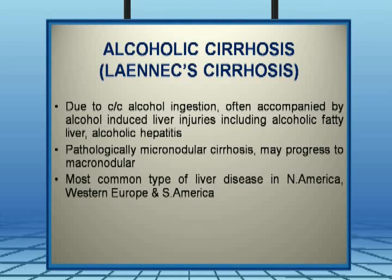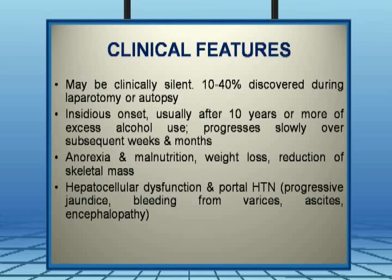Now let's come to alcoholic cirrhosis specifically, also known as Laennec's cirrhosis. It is due to chronic consumption of alcohol and is often accompanied by alcohol-induced liver injuries including alcoholic fatty liver or alcoholic hepatitis, which are the acute manifestations of alcoholic liver damage. Pathologically it is classically micronodular cirrhosis and can affect the left lobe of the liver too, progressing to macronodular. It is the most common type of liver disease in North America, Western Europe, and South America. The condition is clinically vague; 10 to 40 percent of cases are discovered during laparotomy or autopsy. It is insidious in onset, usually after 10 or more years of excess alcohol use.